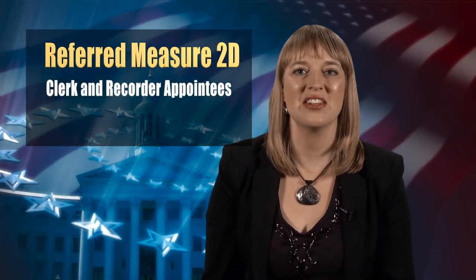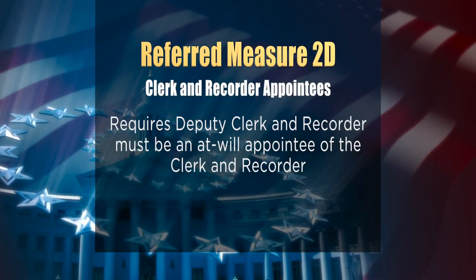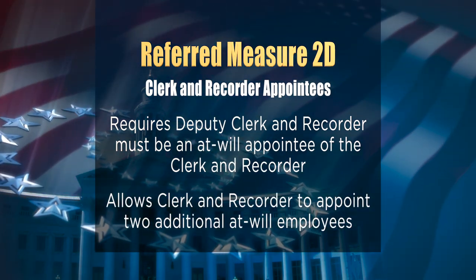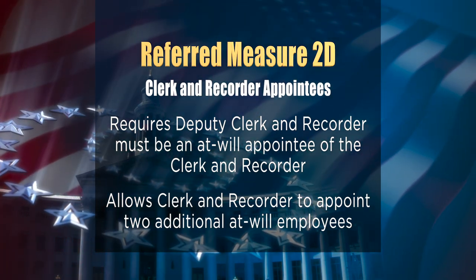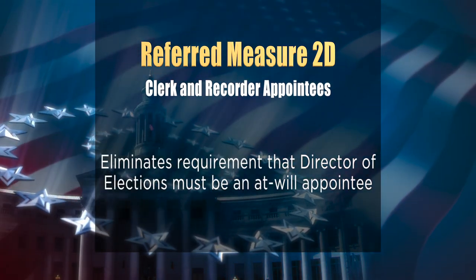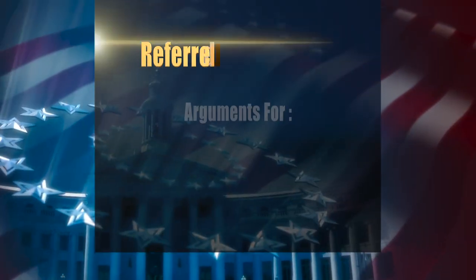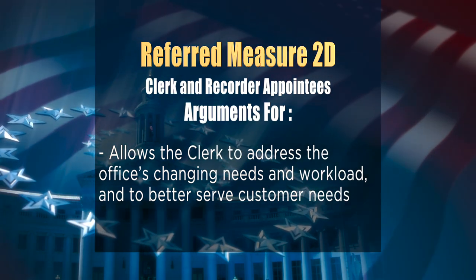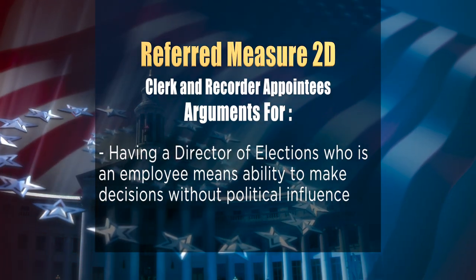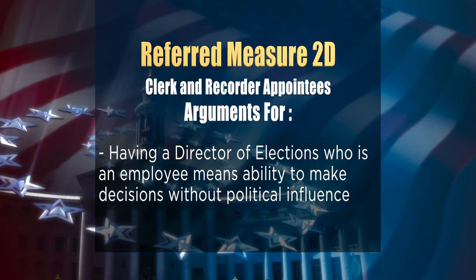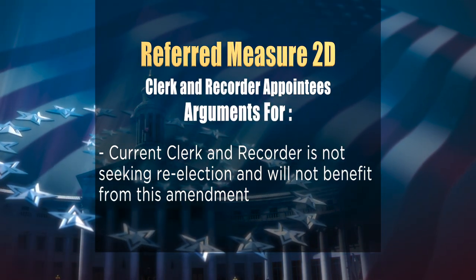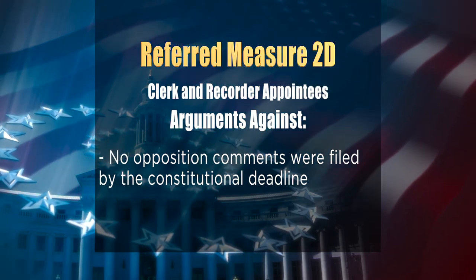Referred Measure 2D would amend the number of appointments the clerk and recorder can make. It would require the deputy clerk and recorder to be an at-will appointee, allow the clerk and recorder to appoint two additional at-will employees exempt from the career service personnel system, and eliminate the requirement that the director of elections must be an at-will appointee. Proponents say this flexibility allows the clerk to address the office's changing needs and better serve customers, and that a director of elections who is a career employee — rather than an appointee — can make decisions without political influence. No opposition comments were filed.